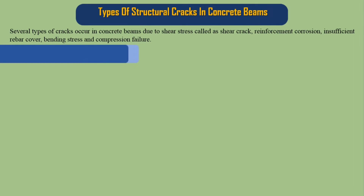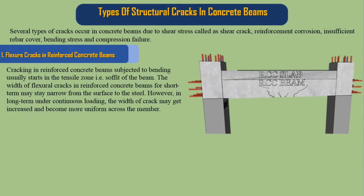Flexure cracks in reinforced concrete beams: Cracking in reinforced concrete beams subjected to bending usually starts in the tensile zone, i.e., the soffit of the beam. The width of flexure cracks for short term may stay narrow from the surface to the steel. However, in the long term under continuous loading, the width of the crack may increase and become more uniform across the member.